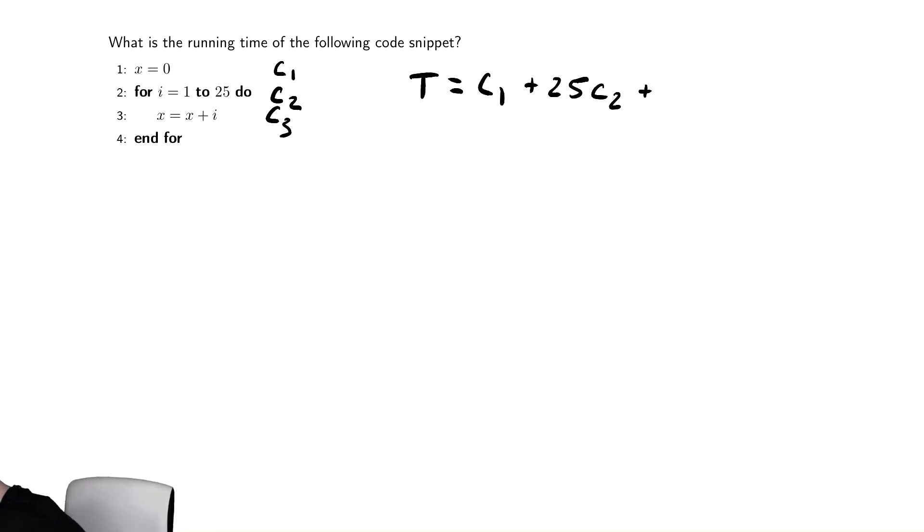And then we have another 25 times, the most embedded statement inside of that for loop executes the same number of times as the for loop. So that looks like the time. Notice the coefficient for 25C2 and 25C3 are exactly the same.